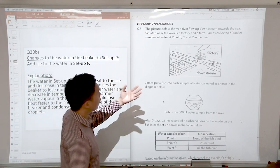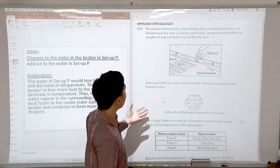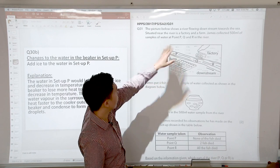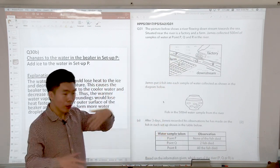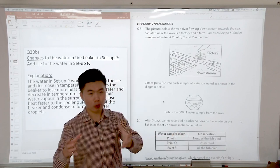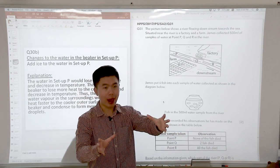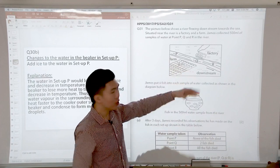The picture below shows a river flowing down the stream towards the sea. Situated near the river is a factory and a farm. Factories, when they run their machines, sometimes they will throw away these waste that they have and then they dump it into the river.